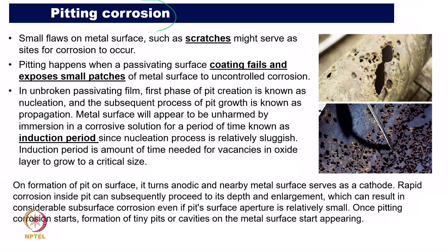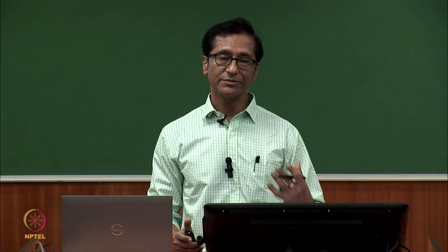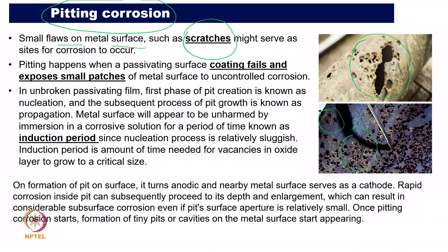Pitting corrosion examples show surfaces with many pits and even through-thickness cracks in pipes, which can cause fracture of the complete surface. Pitting corrosion involves small flaws on the metal surface — even scratches can serve as initiation sites. As mentioned at the start of this course, surface roughness plays a significant role. A scratch may act as a starting point for pitting corrosion. A small flaw on the metal surface such as a scratch might serve as a site for corrosion to occur.